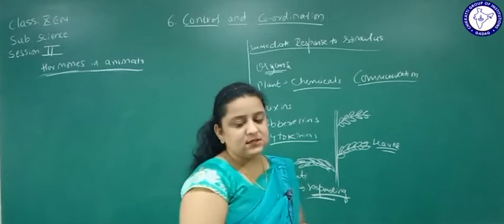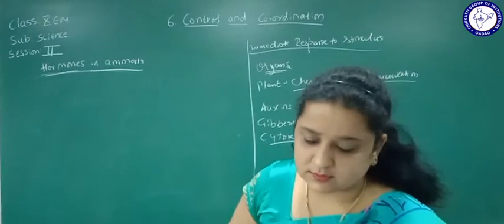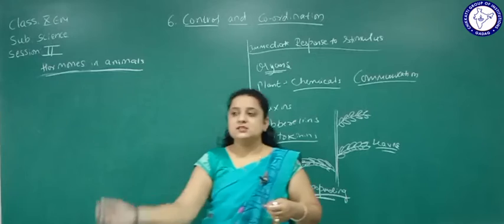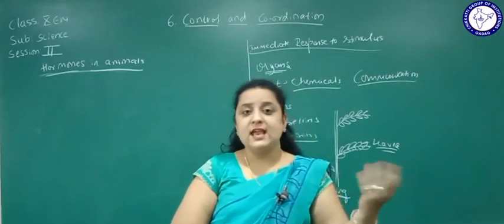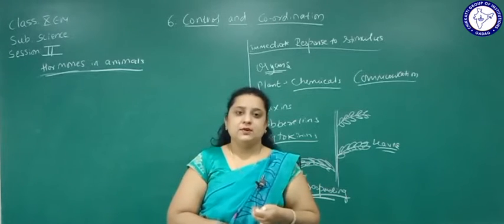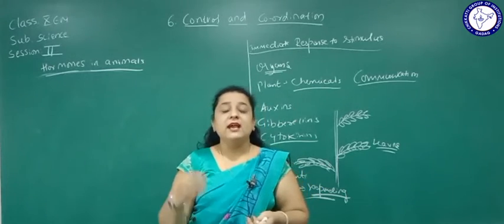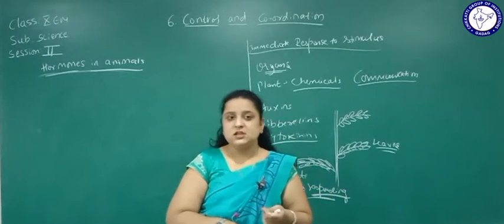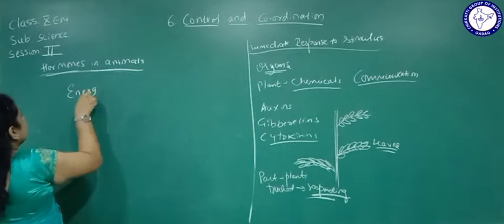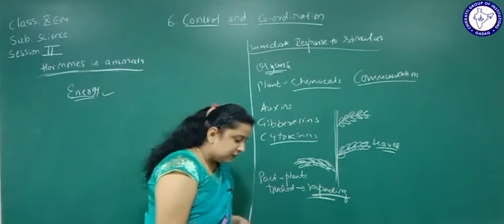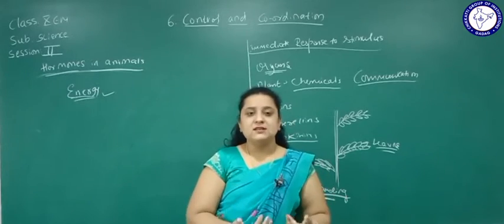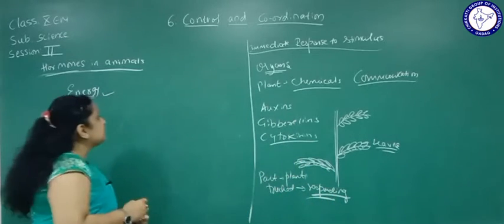Hormones are chemical messengers released by glands into the blood in trace amounts. Consider a squirrel that sees a larger animal — it has two options: fight or escape. Both require energy. These are energy-dependent processes requiring sudden response. Our body has to prepare itself for such emergency conditions, and this is possible through emergency hormones in our body.